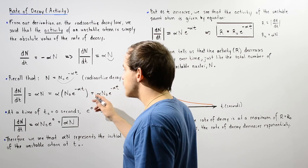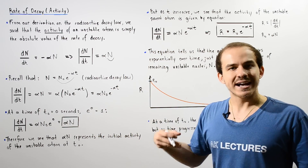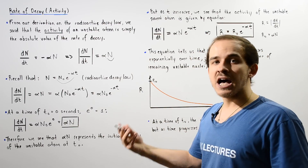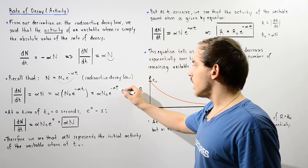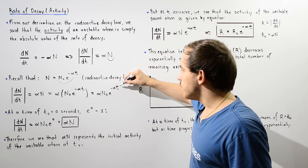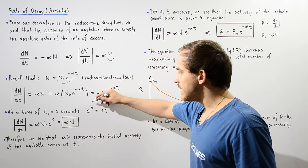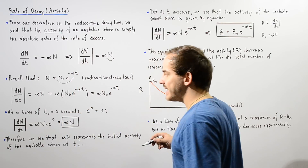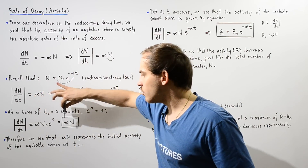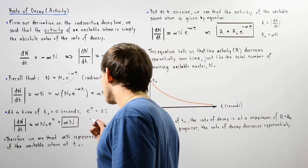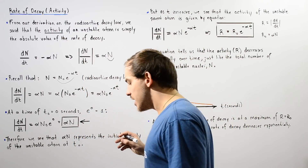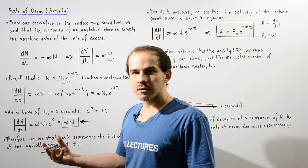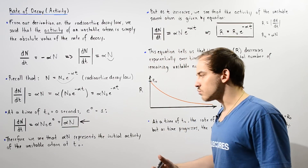Using this equation, we can find what our activity is — the rate of decay of the atom — at a time of 0 seconds by simply plugging in 0 for t. If we plug in 0 for t, we have e to the 0 which is simply equal to 1, and we see that the activity is simply equal to alpha times n-naught. This equation gives us the activity or the rate of decay of our unstable atom at a time t-naught of 0 seconds.